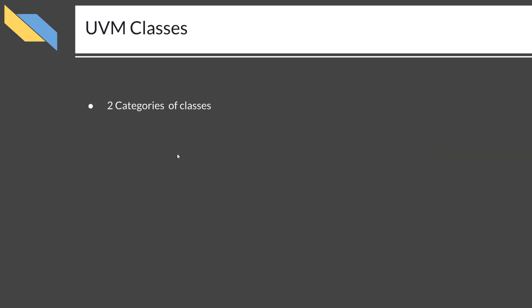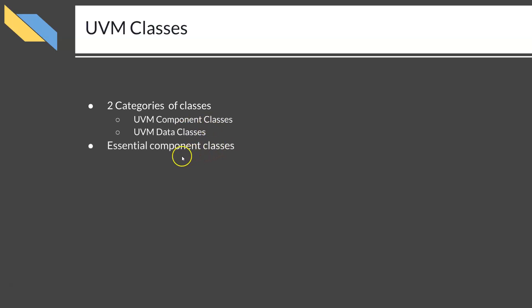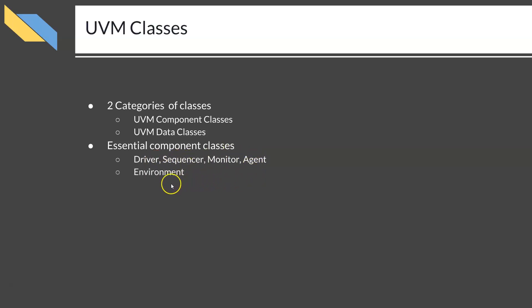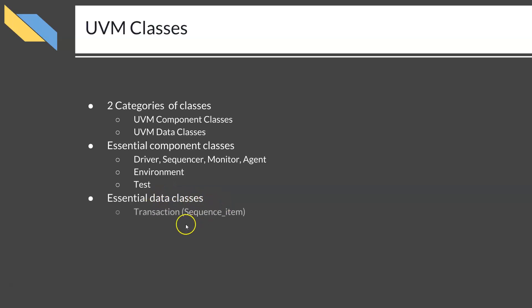There are two categories of classes in UVM: UVM component classes and UVM data classes. The essential component classes needed in any testbench are driver, sequencer, monitor, agent, environment, and test. The essential data classes required are a transaction class and a sequence class.